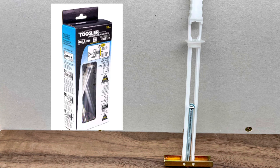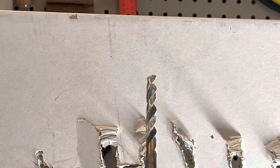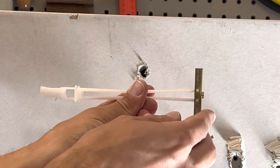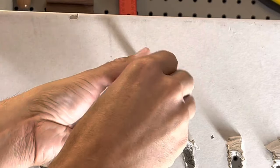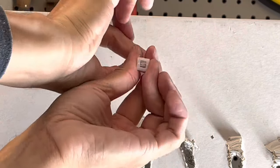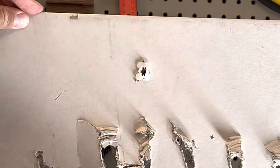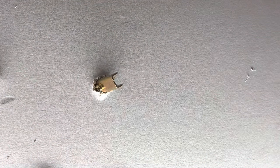Next up is the toggler snap toggle. This anchor requires the largest hole, needing a whopping 1/4 inch hole drilled prior to turning the brass base sideways and inserting it into the hole. You have to push and pull on it a few times to get it to sit flat. Once it's in, you slide the collar until it's flush with the wall, then finally wiggle the straps until they fall off. A little bit more of a process than the other ones, but now you have your anchor.